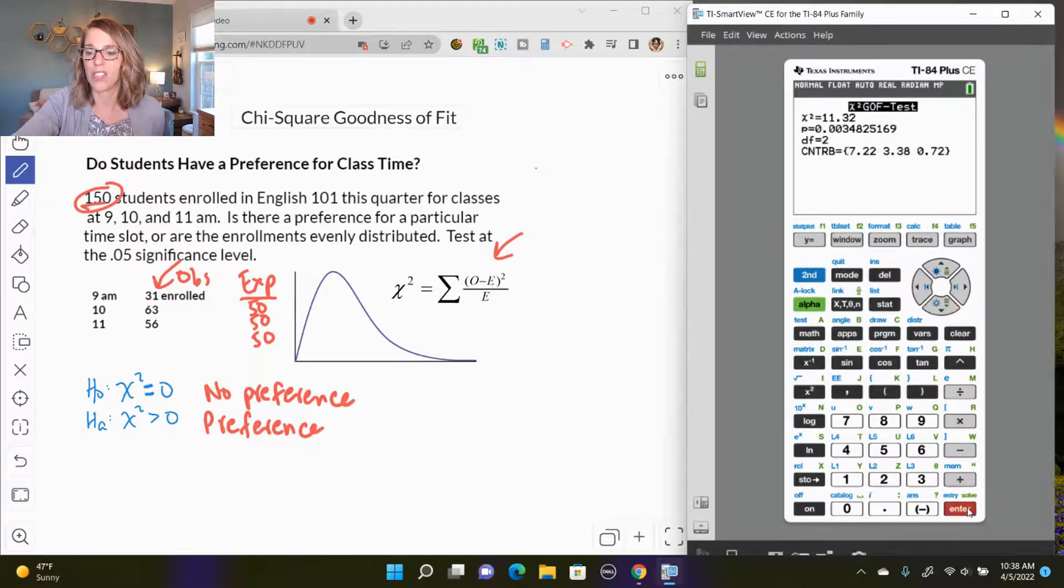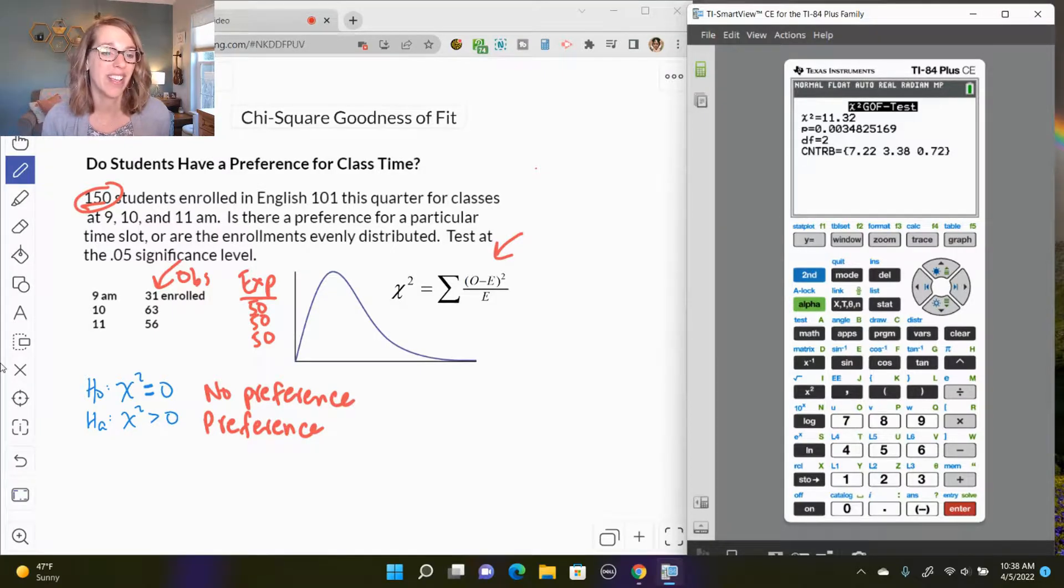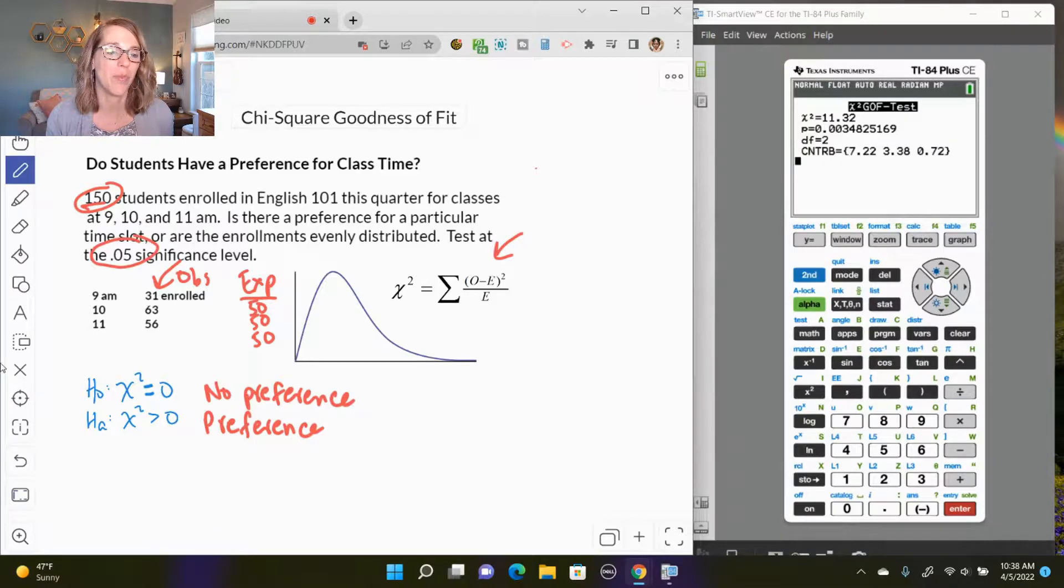And then I arrow down to Calculate. So super nice. It gives me the chi-square value, which is 11.32, and it also gives me the p-value, which is 0.0034.